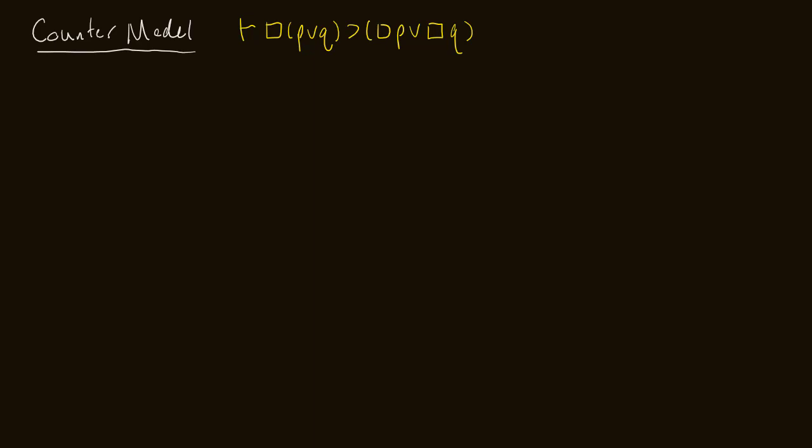All right, today what we're going to do, as I said last time, is do a counter model. And so what do we need for a counter model? We need an argument that is not actually true and leaves us with an open branch on our tree. So I have picked an argument for us which will not be true, which will leave us with an open branch, which will allow us to draw a counter model for this argument.